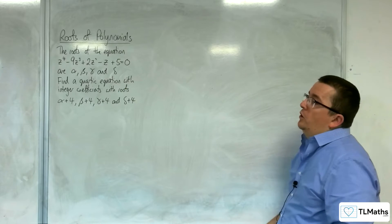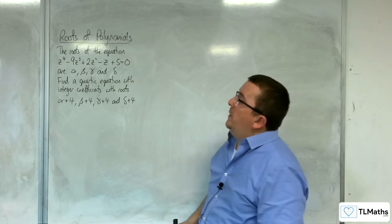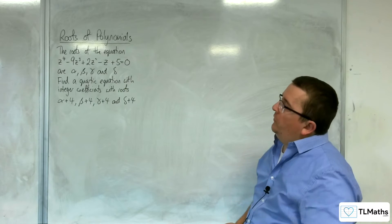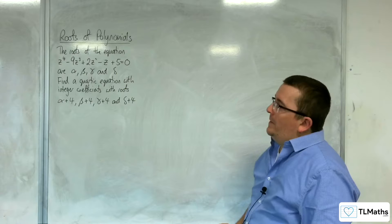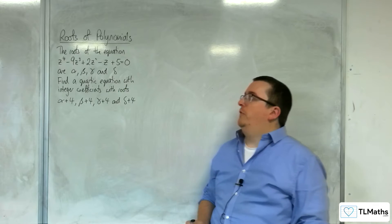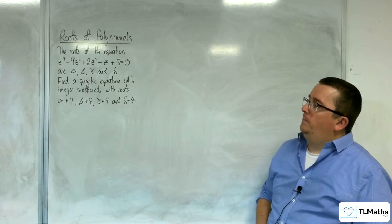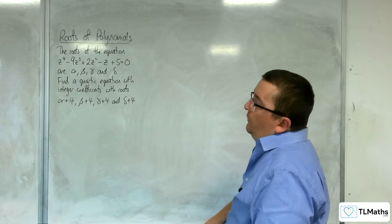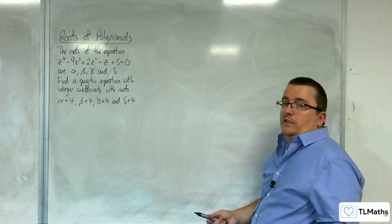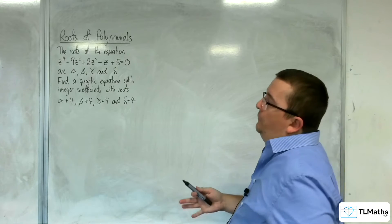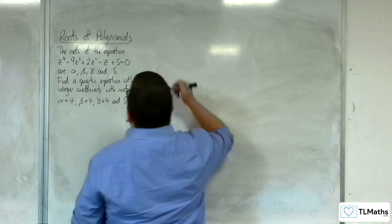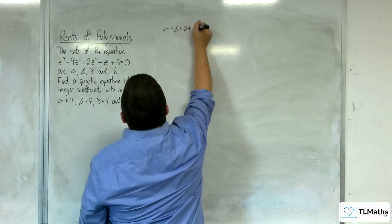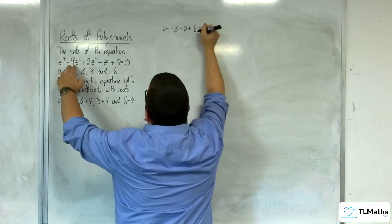In this video, the roots of the equation z⁴ − 9z³ + 2z² − z + 5 = 0 are alpha, beta, gamma, and delta. Find a quartic equation with integer coefficients with roots alpha+4, beta+4, gamma+4, and delta+4. The coefficient of z⁴ is 1, so I don't need to divide through by anything. I can go straight in to writing that alpha + beta + gamma + delta, the sum of the roots, is going to be 9 — the negative of minus 9.